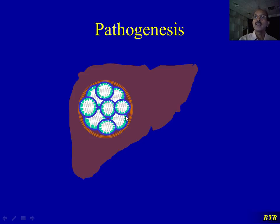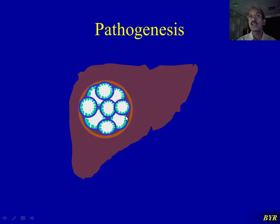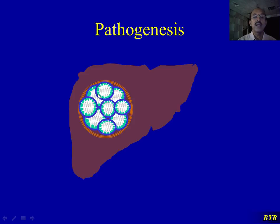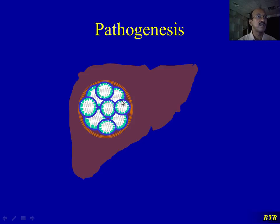As the cyst becomes older, the germinal cells try to replicate the adult parasite. Though the environment is not suitable, they form small miniature heads of the parasite — sometimes forming the hooklets of the parasite. They cannot form the whole parasite, which is why long-standing hydatid cyst fluid contains scolices, or sometimes the hooklets of the scolices, though not the adult parasite.